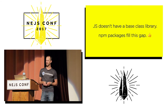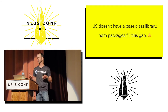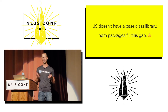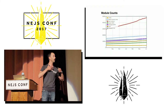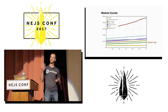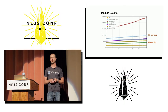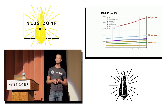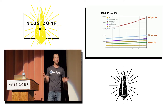JavaScript doesn't have a base class library, and because of that, we're seeing NPM grow at an amazing rate. NPM effectively has filled in this gap, and NPM's growth has been unprecedented. Look at these lines — you want to guess which one is NPM? The green line is .NET's package manager, NuGet — they add 66 packages per day. Java's is 139 per day. NPM? Almost 500 packages are added every single day.